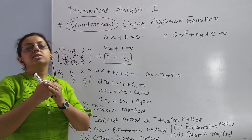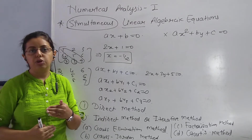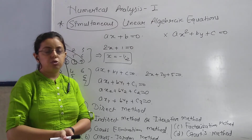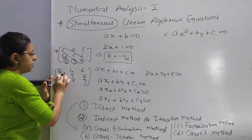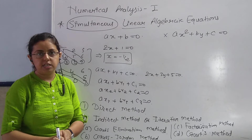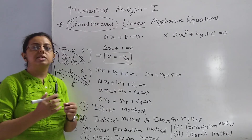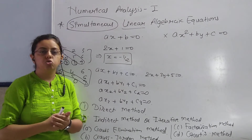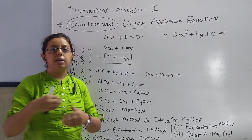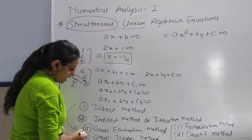After forming the upper triangular matrix, you get a new system from it. Then you apply back substitution. From back substitution you get the values of the variables. The variables' values are found, and that gives you the solution of the given system. That is basically the Gauss elimination method.